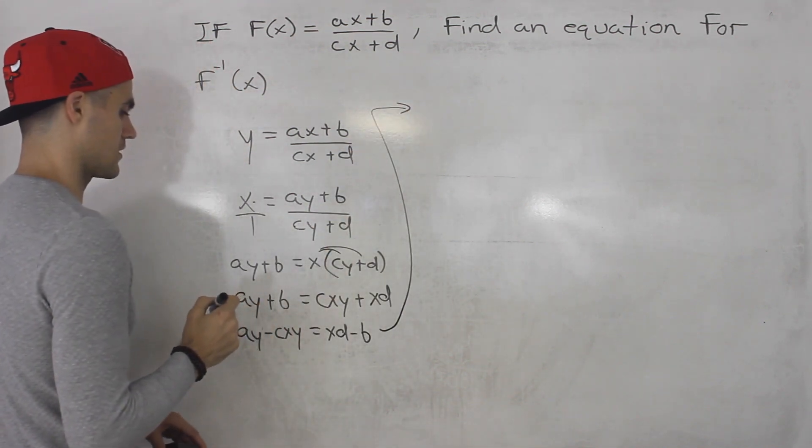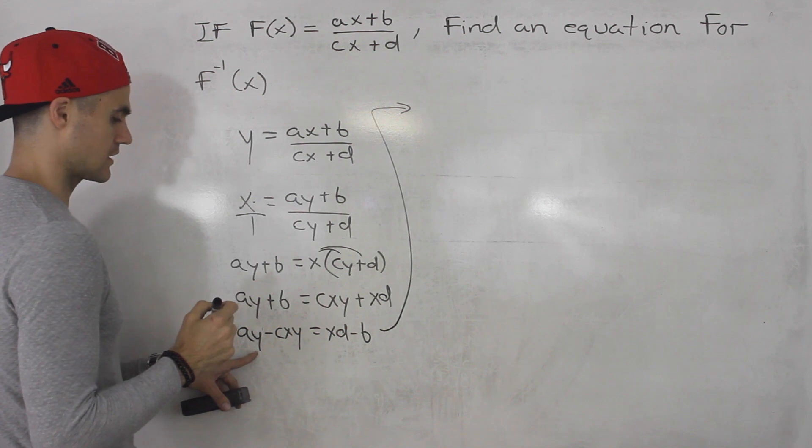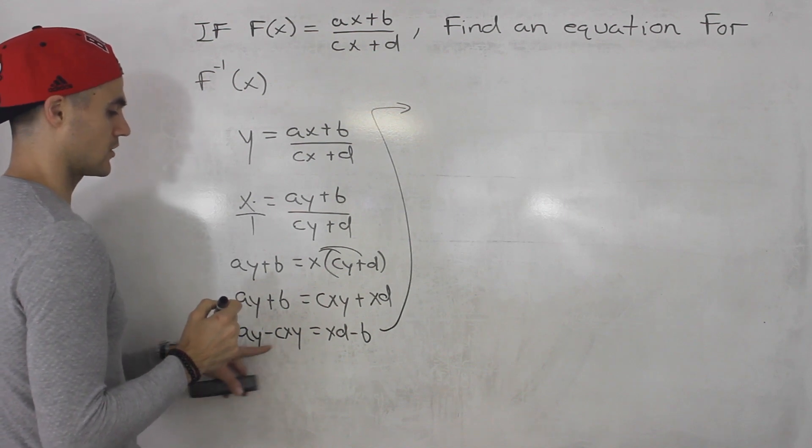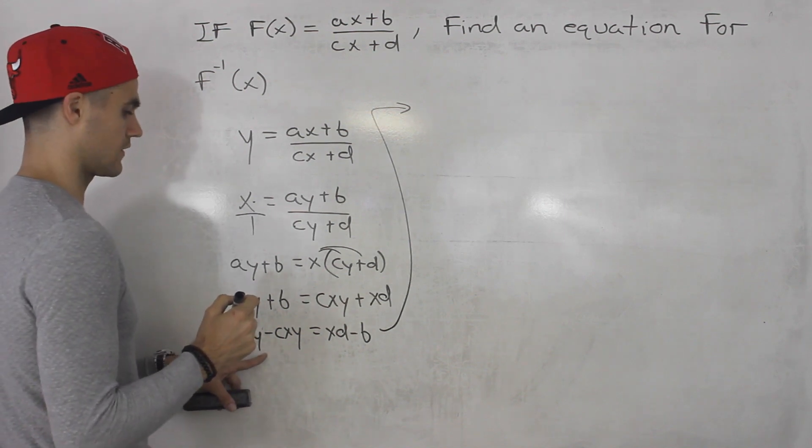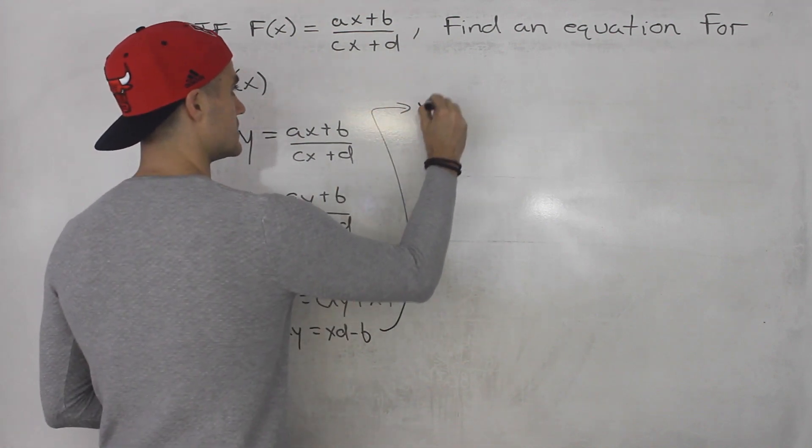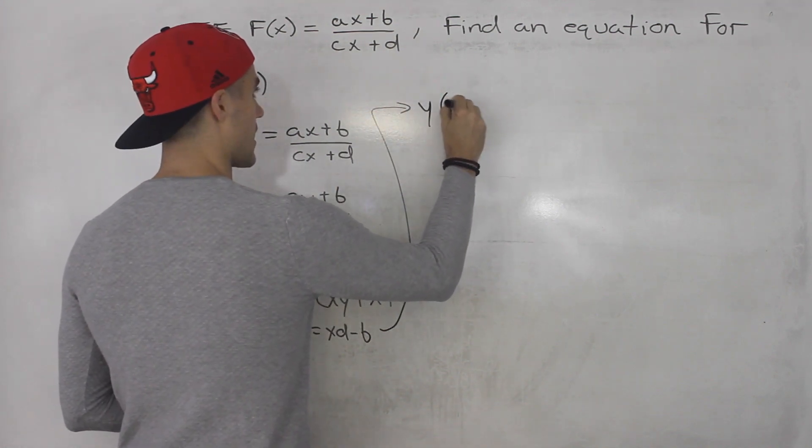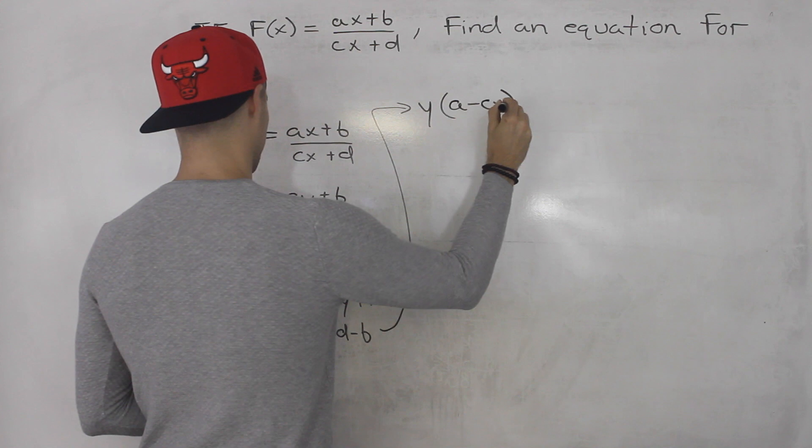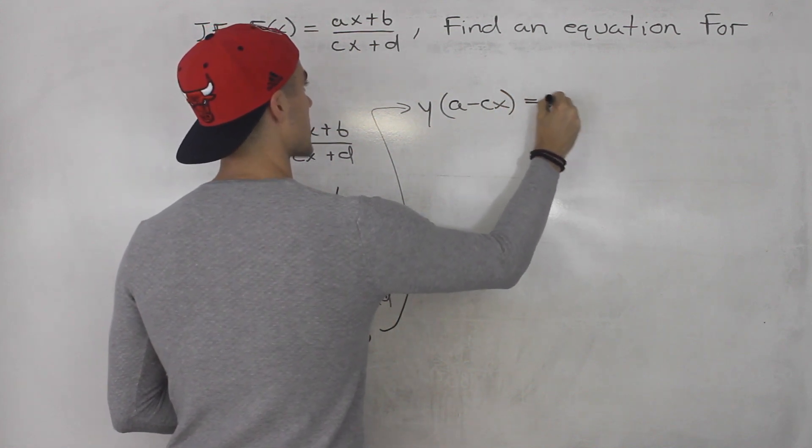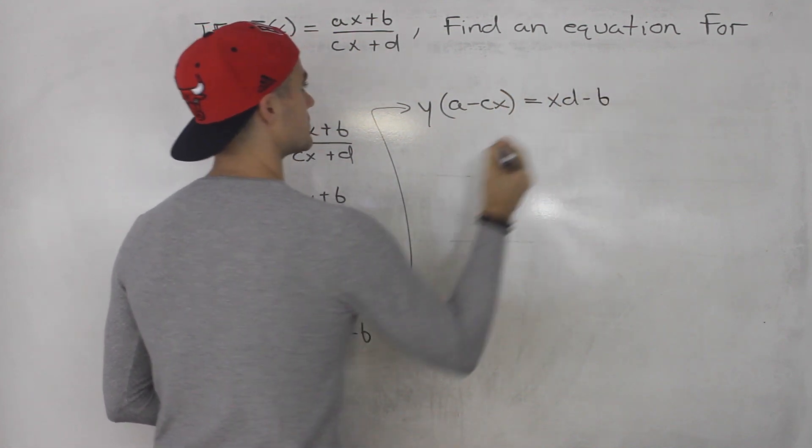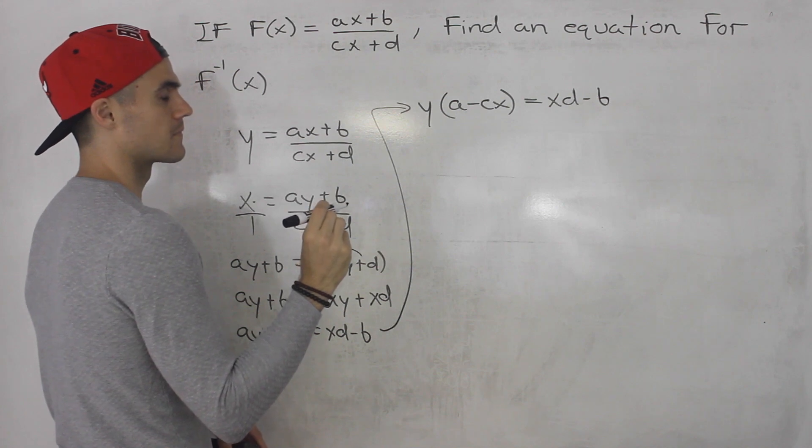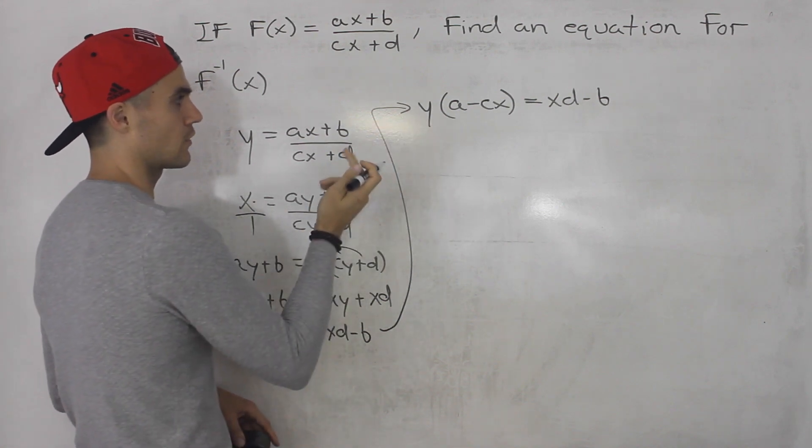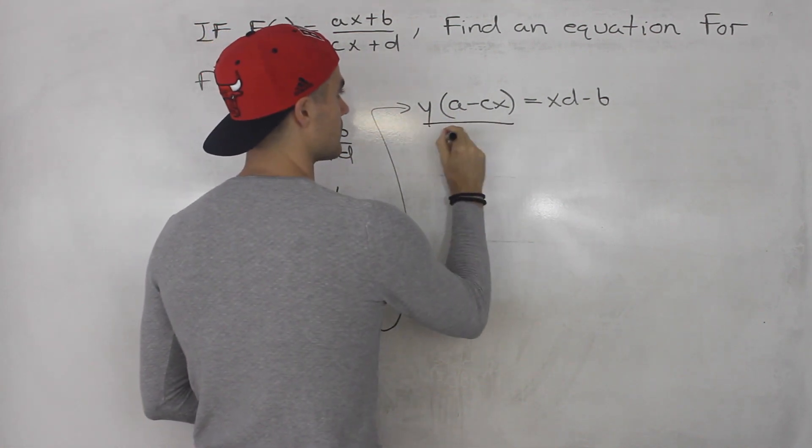So continuing this up here what we can do now is we can factor out a y from both of these expressions on the left side. So we'll have taking out a y we'll be left with a minus c x equals x d minus b. And now it's easy to isolate for the y, we just divide both sides by a minus c x.